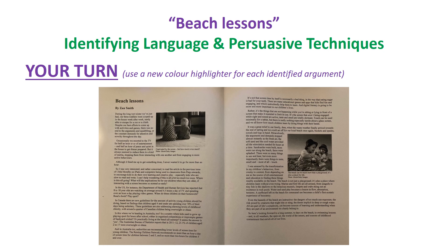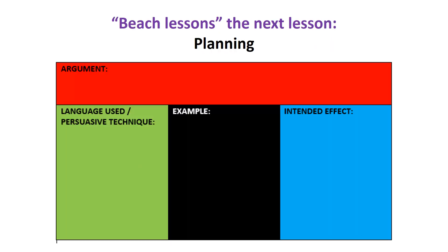Now it's your turn to identify language and persuasive techniques. Look at the arguments you have identified and pick out where they appear in the article. Allocate one color highlighter for each different argument — that way, when you highlight words and phrases, you'll know which argument each one belongs to. In the next lesson, we'll take that information about the identified arguments and examples to put into a planning sheet. See you then.